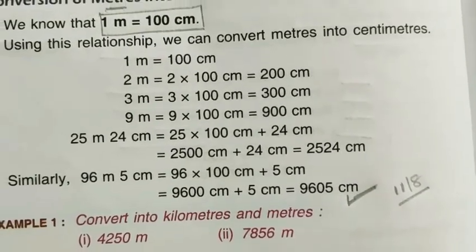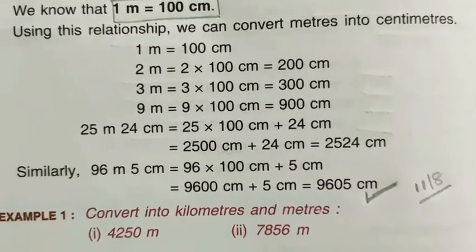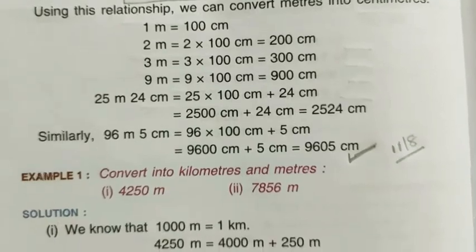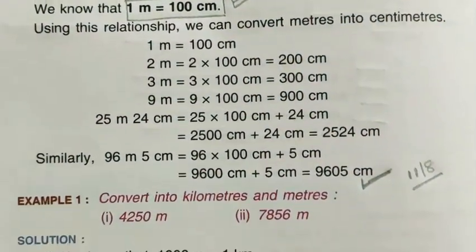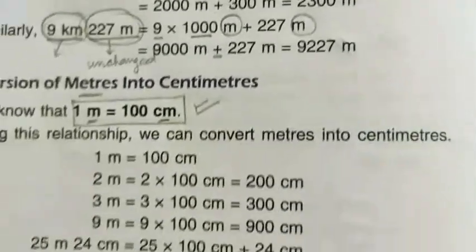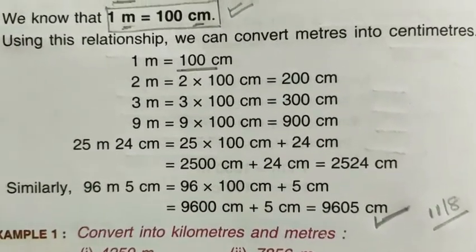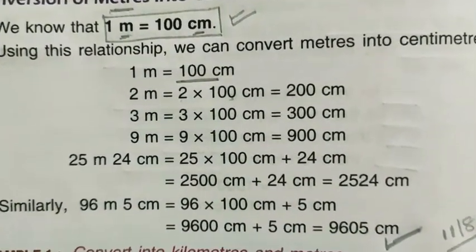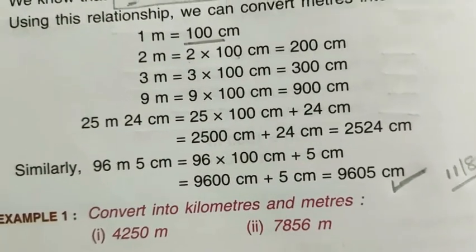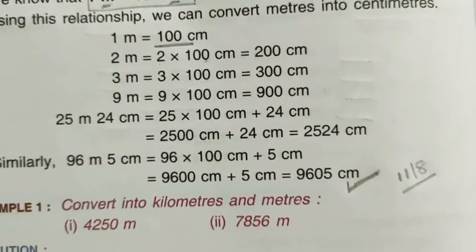Just like one kilometer equals one thousand meters, similarly one hundred centimeters make one meter. Using this relationship, we can convert meter into centimeter. Meter is bigger, centimeter is smaller. For bigger to smaller unit conversion, we multiply — multiply with one hundred. So one meter equals one hundred centimeters, two meters equals two into one hundred, three meters equals three into one hundred, and so on. Multiply the meter value by one hundred and it will be converted into centimeter.